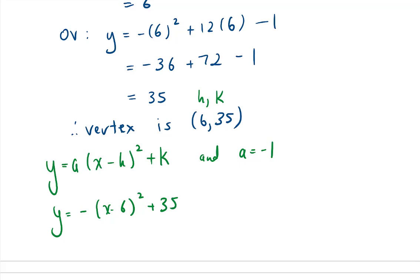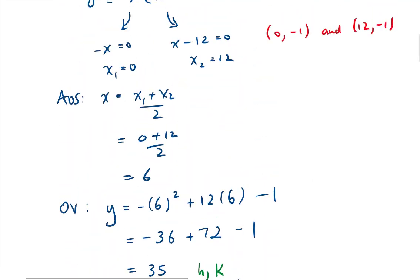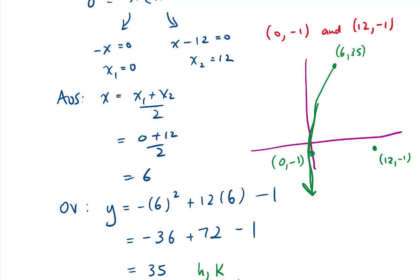And lastly, with the vertex and the two points we found using symmetry, we can sketch a graph of this parabola. So recall we had the points 0, negative 1, and 12 and negative 1. So there's 0 and negative 1. Here is 12 and negative 1. And we know that the vertex was at 6 and 35. We sketch this parabola. We now see that the parabola opens downwards, as predicted by our a value.